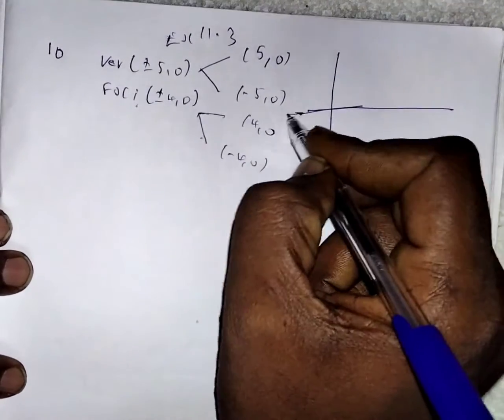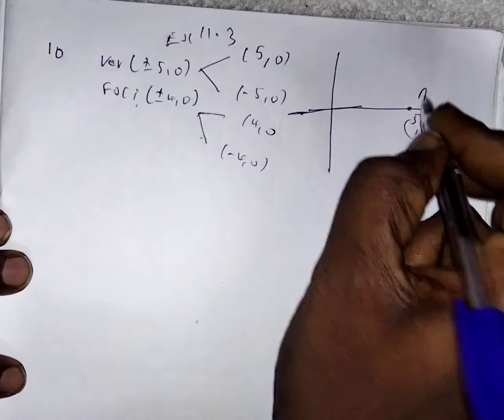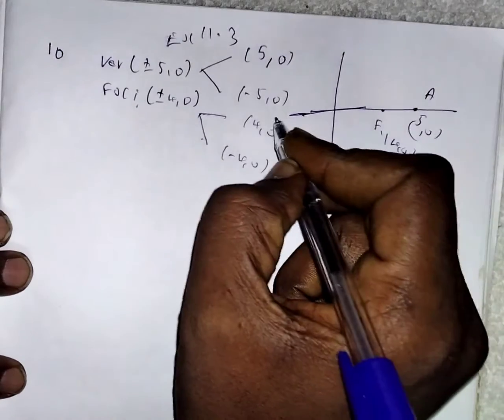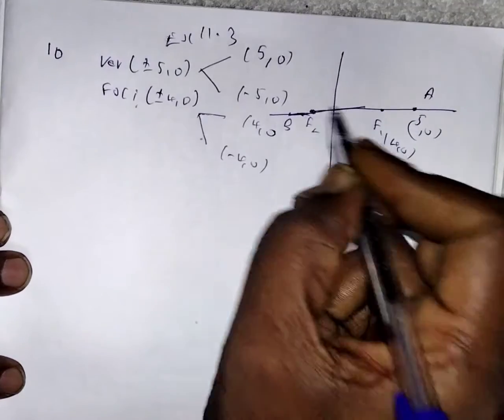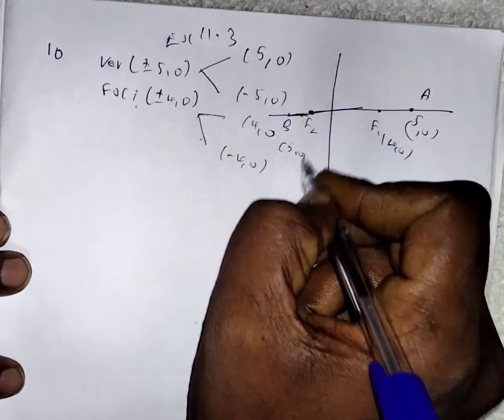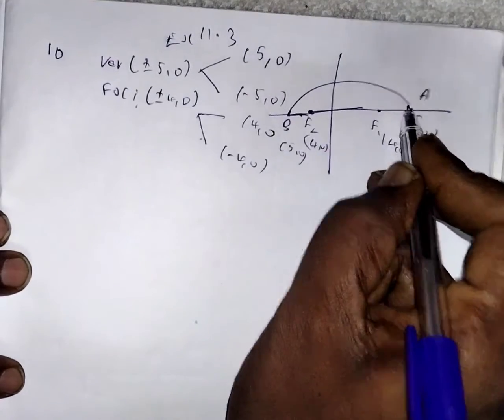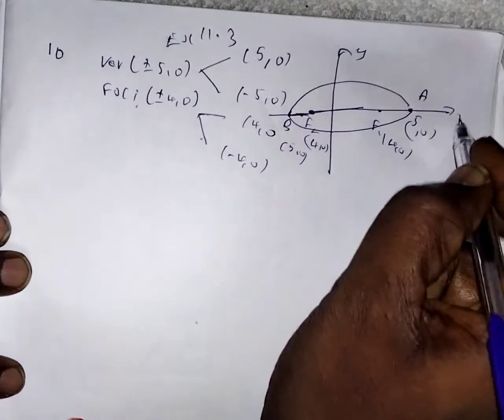Then if you draw the diagram, you take approximately 5 comma 0, so vertex A. Then F1 focus at 4 comma 0. We take here approximately F2 and vertex B at minus 5 comma 0 and minus 4 comma 0. So we draw the ellipse in parallel to the x-axis.